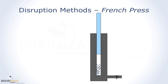An alternative to sonication that is commonly used is known as French press. Here we fill a metal chamber with a sample that contains the cells we want to break. We then push down on the sample using a piston, which raises the pressure. By turning a valve, we can let out small amounts of the sample at a time, and the sudden drop in pressure as the cells exit the chamber causes them to burst open and relieve their contents.